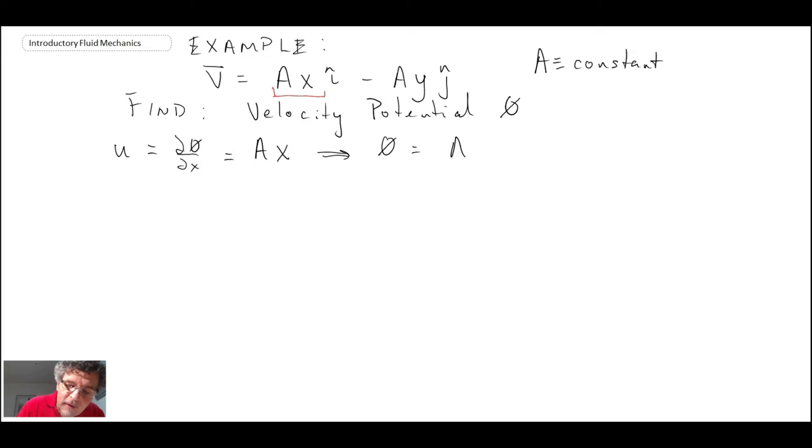If I go ahead and integrate that, what I then get is phi is equal to Ax squared divided by 2, plus some function of y. It could be a constant or a function of y, we leave it arbitrary at this point. I'm then going to take this and plug it into the relationship for v velocity, which is d phi by dy, and then I'm going to equate that to minus Ay, which is from the velocity that we know.